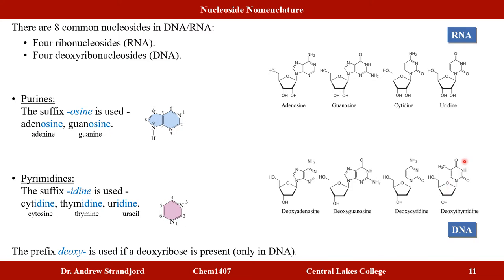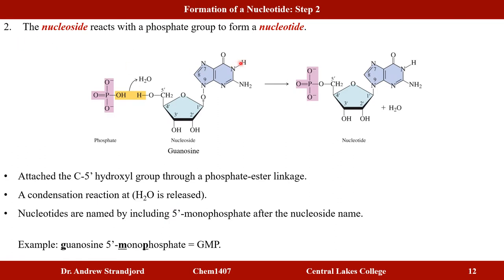The second chemical reaction is to react the nucleoside with a phosphate group — another condensation reaction forming a phosphate ester linkage — to produce a nucleotide, the building block for both RNA and DNA. Nucleotides are named by adding 'five monophosphate' after the nucleoside name; for example, guanosine becomes guanosine-5'-monophosphate, or GMP.